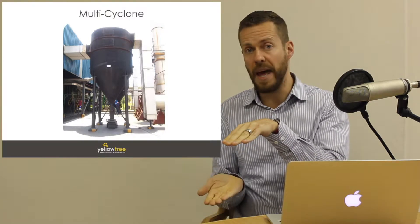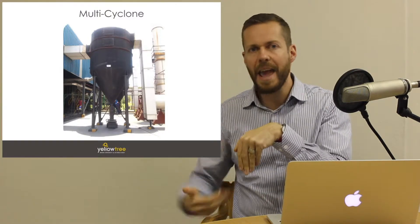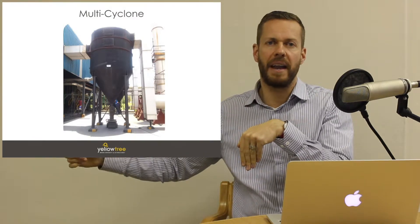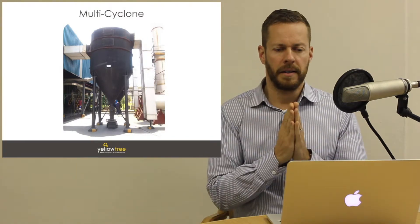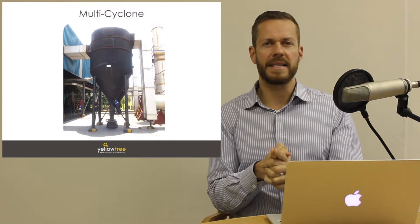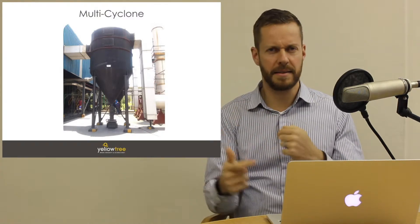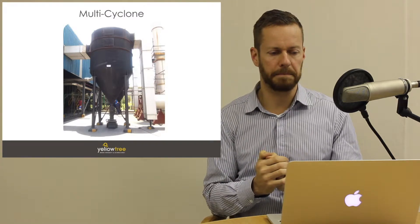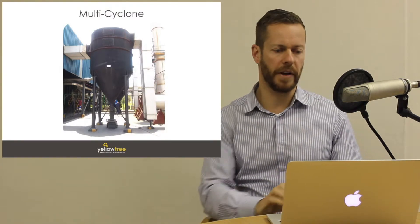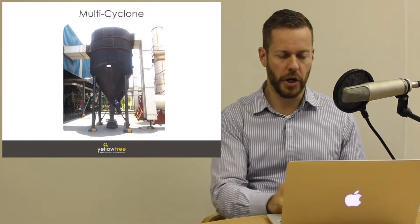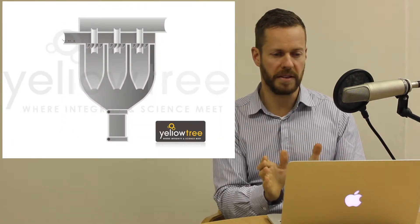If there weren't two flaps — if there was just one and it opened — air would get sucked in because of the ID fan downstream. That's an important concept; if you didn't understand it, please go back and listen again. Now let's take a look at a short video showing the multicyclone we just saw in the previous photograph.